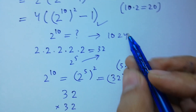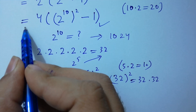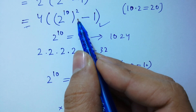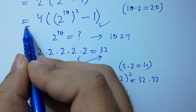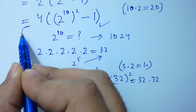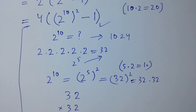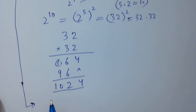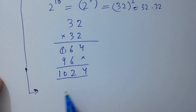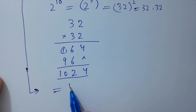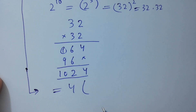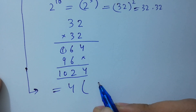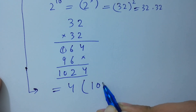So 4 times open bracket 2 to the power 10 squared minus 1 close bracket equals 4 times open bracket 2 to the power 10 plus 1 close bracket times open bracket 2 to the power 10 minus 1 close bracket. Since 2 to the power 10 is 1024, this becomes 4 times 1025 times 1023.